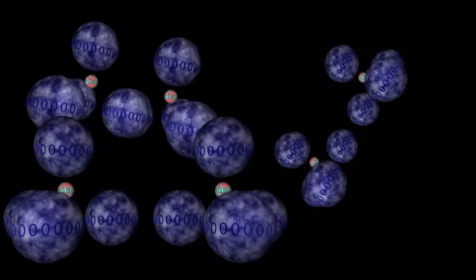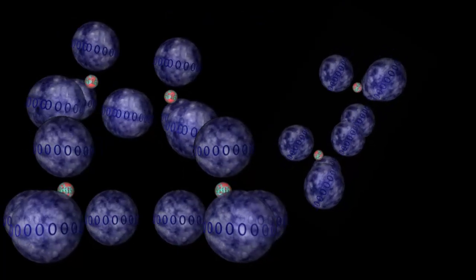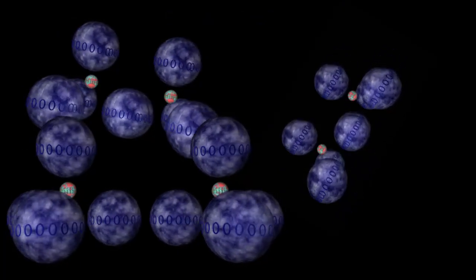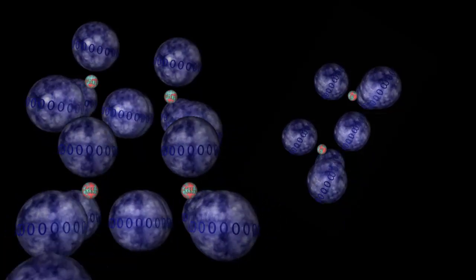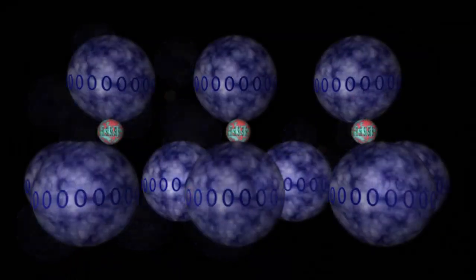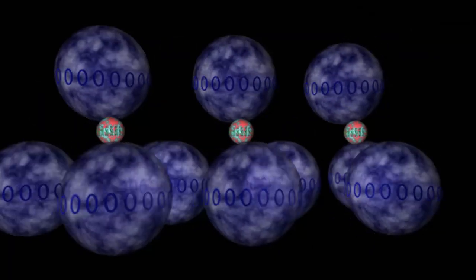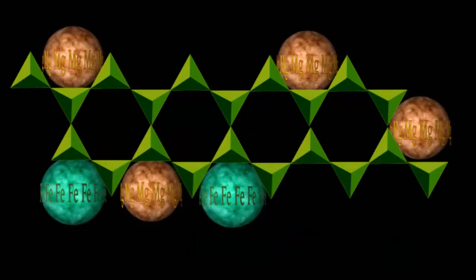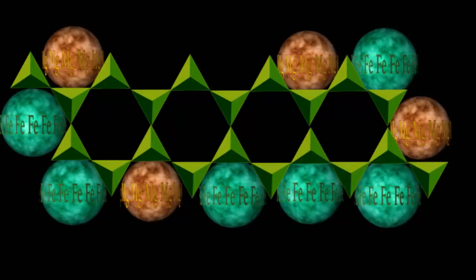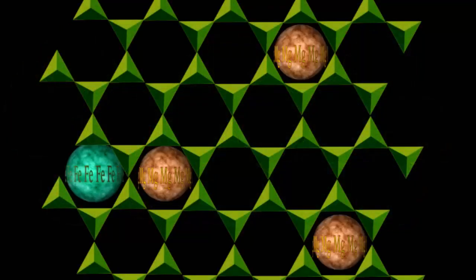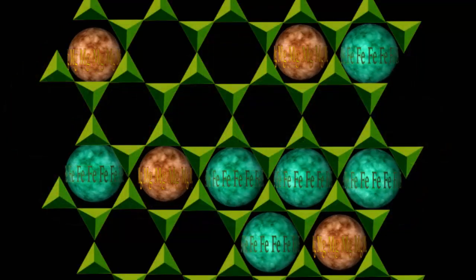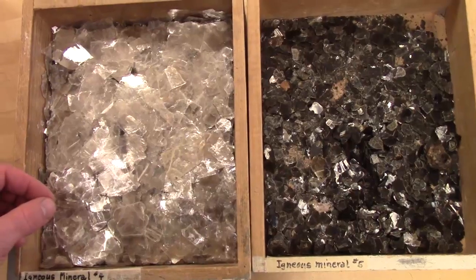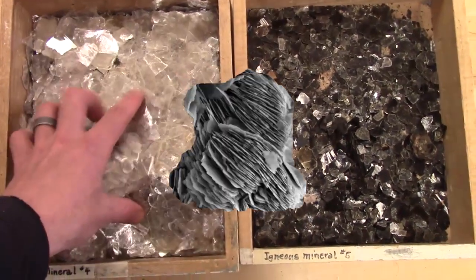Welcome back, Mineralogy fans! The more silica tetrahedra there are left in a melt, the more they join together by sharing corners. After making single chains in the pyroxene group, double chains were formed in the amphibole group. Now we begin to share all three basal corners to make sheets. The sheet silicates come in two main flavors: the micas and the clay sheet silicates.